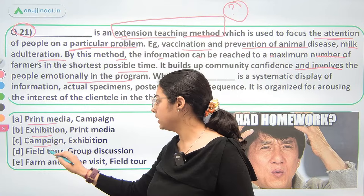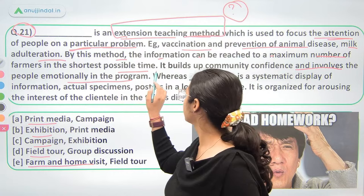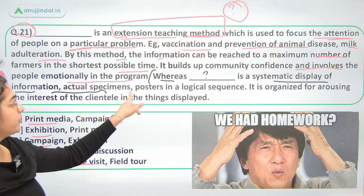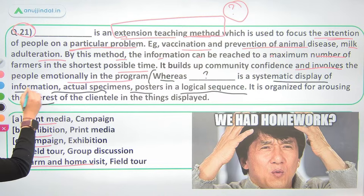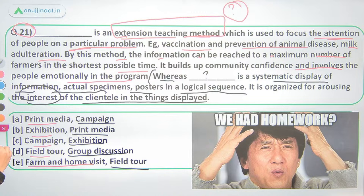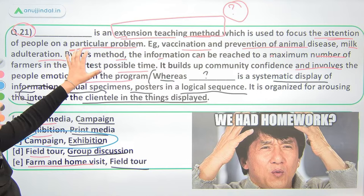Options are: print media, exhibition, campaigning, field tour, and farm and home visit. The second part asks about a systematic display where all information, actual specimens, and posters are displayed in a logical sequence, organized to arouse the interest of clientele. Options: campaign, print media, exhibition, group discussion, and field tour. The answer is option number C.